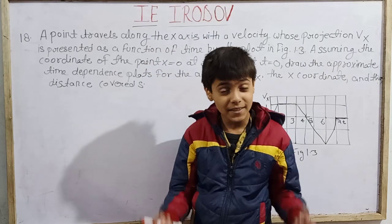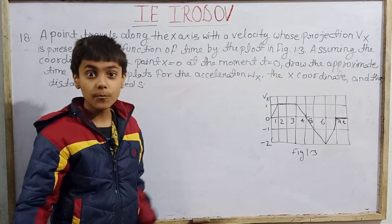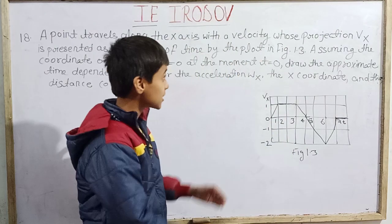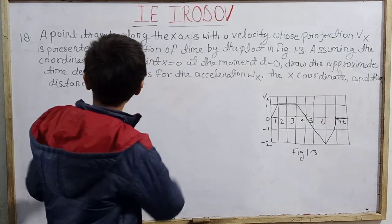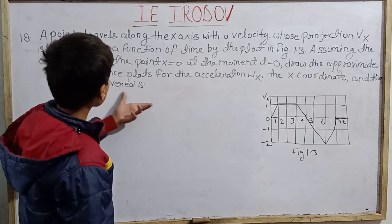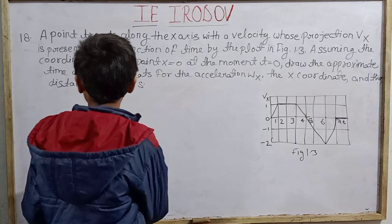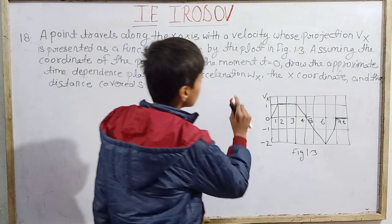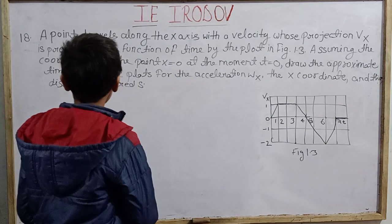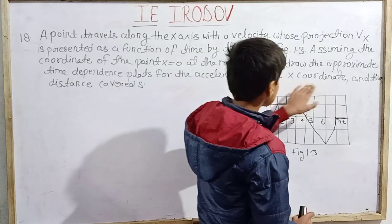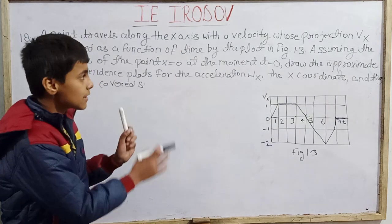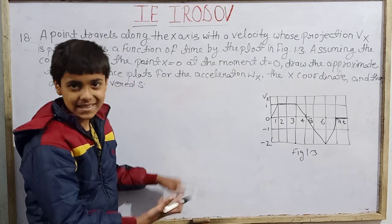Good morning and welcome back to SK Wonder Kids. We are back again with IE Irodov's textbook problems in general physics, first part — some mechanics, covering kinematics up to relativistic mechanics. From the kinematics section we are going to try question number 18: a point travels along the x-axis with velocity whose projection vx is represented as a function of time by the plot in figure 1.3. Assuming coordinate x equals 0 at t equals 0, draw approximate time dependence plots for acceleration wx, the x-coordinate, and the distance covered s. Basically the answer is in the graph.